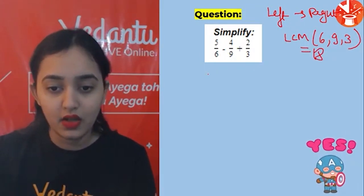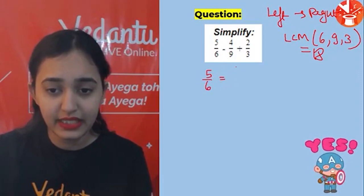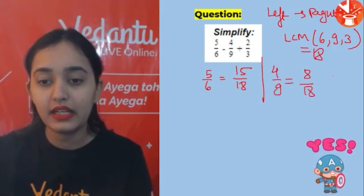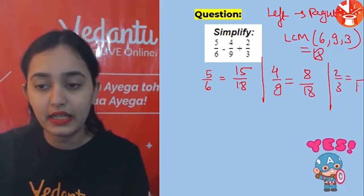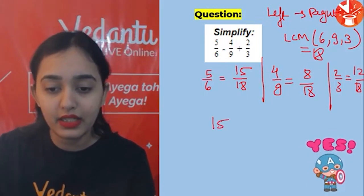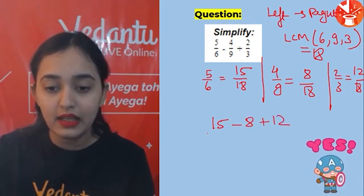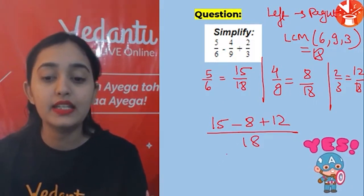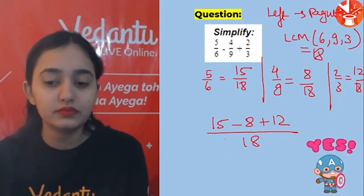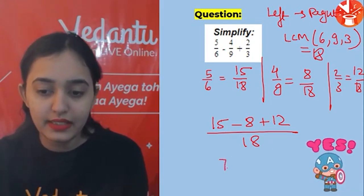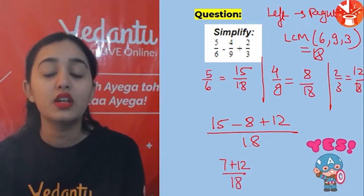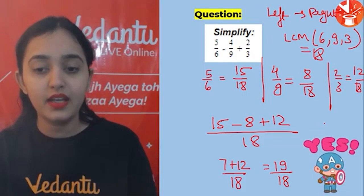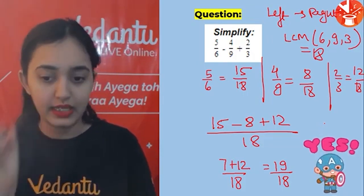So the equation becomes: 15/18 − 8/18 + 12/18. First subtract: 15 − 8 = 7. Then add: 7 + 12 = 19. So the answer is 19/18. Pehle subtract kiya, phir add kiya, aur answer find out kar liya.